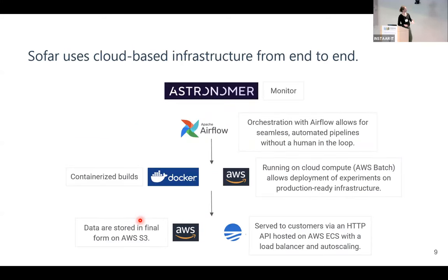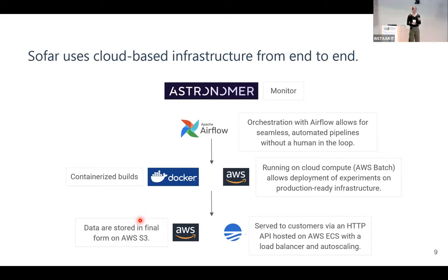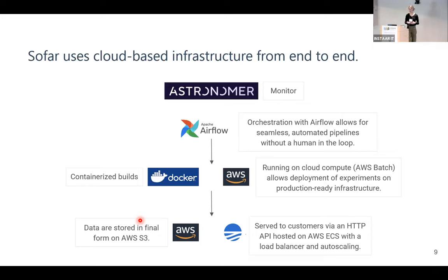At a high level, we use cloud-based infrastructure from end to end. We use an orchestration layer that takes the human out of the loop for dependencies and tasks that need to happen concurrently or sequentially. We use containerized builds to help modularize our code and know exactly what we're working with. We run everything on cloud compute through AWS Batch, a parallelization tool from AWS, and everything is stored in final form on AWS S3 and served internally or to customers via APIs.